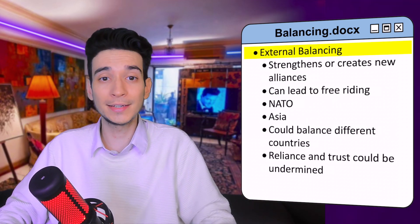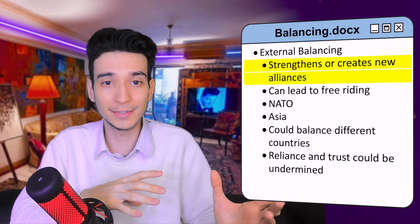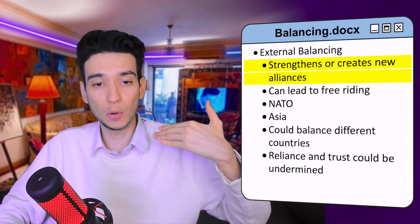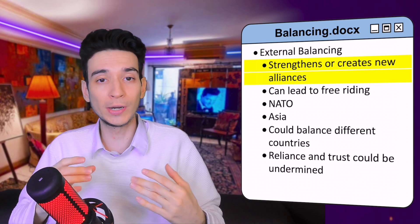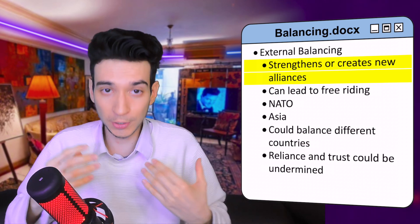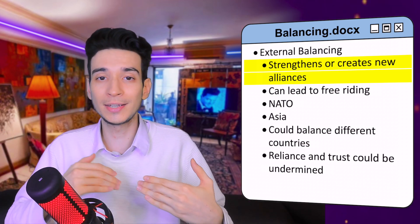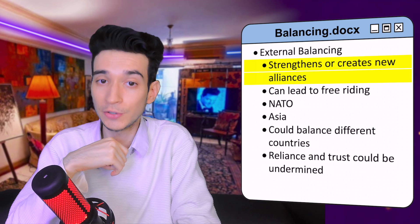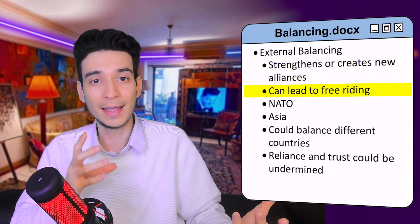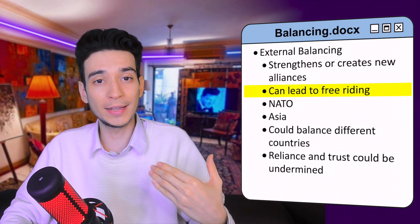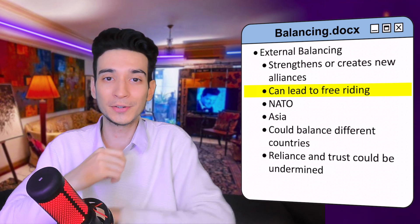External balancing is when a country strengthens or creates new alliances with other countries to oppose a more powerful country or a rising power. Instead of relying on their own internal capabilities, they form alliances with countries that also see the more powerful country as a potential threat. This approach can also lead to free riding, where a country avoids the costs and risks and just enjoys the benefits of the alliance.